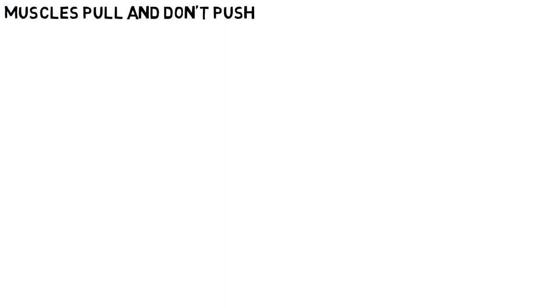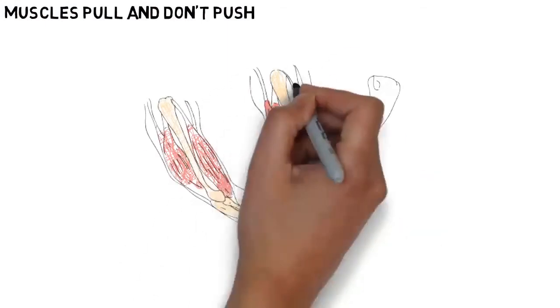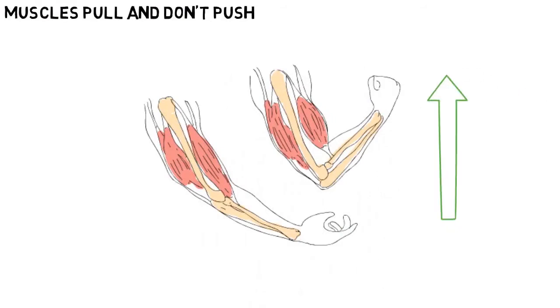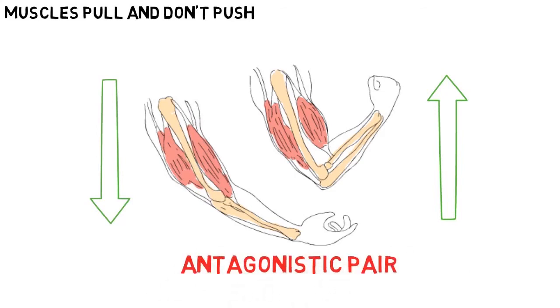Muscles used for movement are attached to two different bones by tendons. To make a joint move in two directions, you need two muscles to be able to pull the joint in two directions. This is called an antagonistic pair.